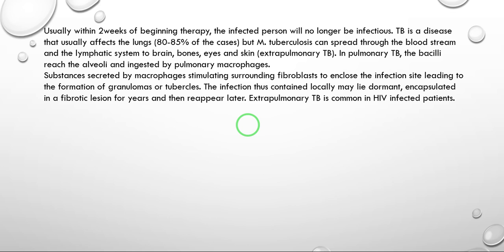The bacilli present in the alveoli are ingested by pulmonary macrophages as part of the defense system. Substances secreted by macrophages stimulate the surrounding fibroblasts, which are connective tissues that help in the healing process, leading to the formation of granulomas at the infection site. The infection thus contained locally may lie dormant, encapsulated in a fibrotic lesion for years. Extra-pulmonary TB is common in HIV-infected patients.